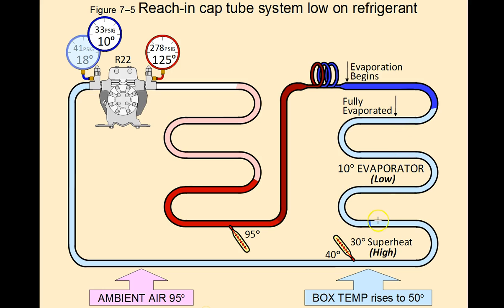In a normal system, we would have the refrigerant changing state all the way down to the very end of the evaporator coil, and then we would pick up superheat right at the end — that would be the normal operating condition. But in this undercharged condition, everything boils off early, and we have all of the remaining evaporator coil in which to pick up superheat.